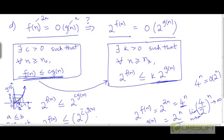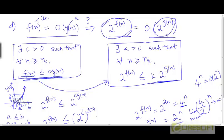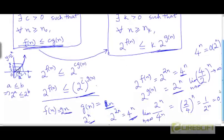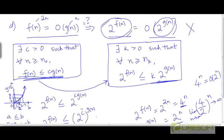That is why we take f = 2n and g = n: when we take 2 to the power of both sides, we get a larger base on the f side. Even though f was O(g) earlier, 2^f = 4^n will not be O(2^g) = O(2^n), since 4^n is not O(2^n). Therefore, this claim is disproved — we have a valid counterexample.